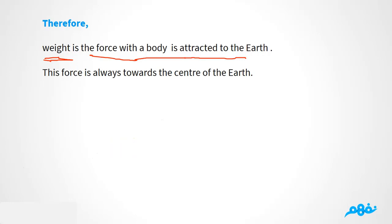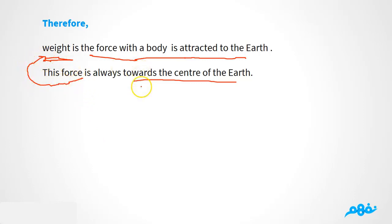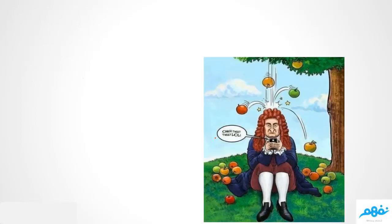There is a big difference between weight and mass. Mass is the amount of matter in one object — for example, your mass might be 70 kilograms. Weight, on the other hand, is the force by which the body is attracted to the earth. This force always acts towards the center of the earth. Mass has no direction, but weight — the force — has a direction, which is towards the center of the earth.